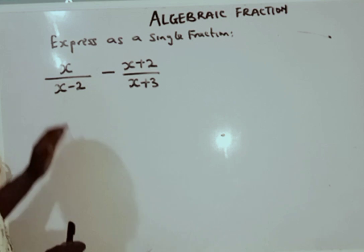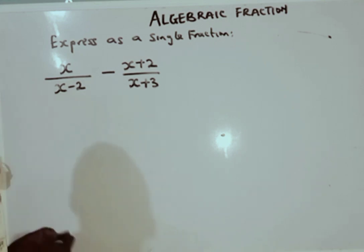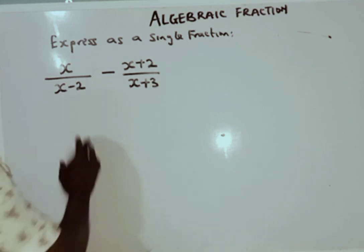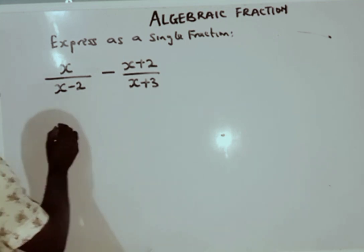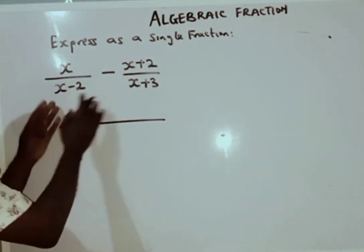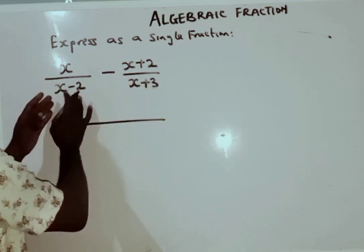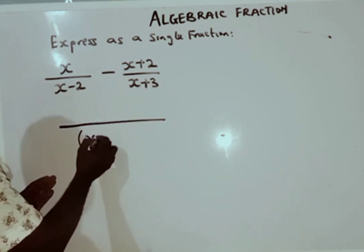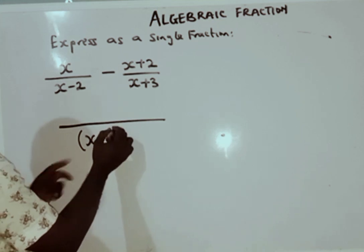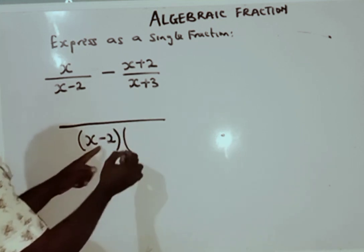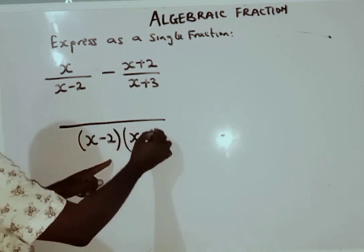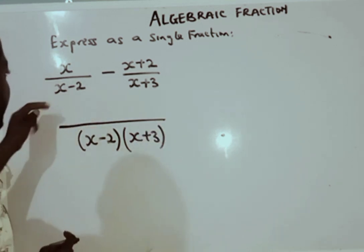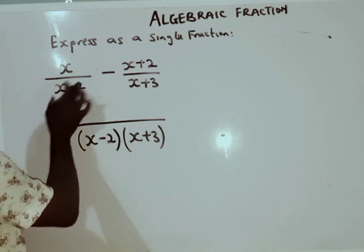This question involves subtraction of fractions. The first thing we are going to do is find the LCM. To find the LCM I'm going to take the product of the denominators, so my LCM is going to be x times (x minus 2) times (x plus 3). This is going to be my LCM.